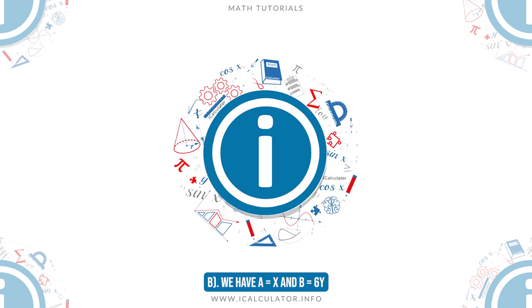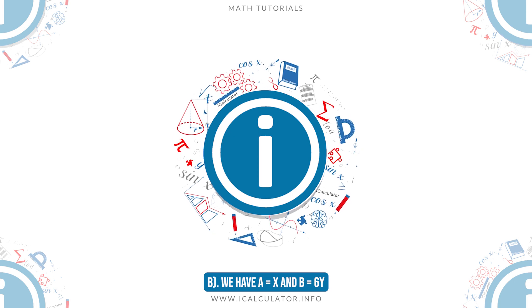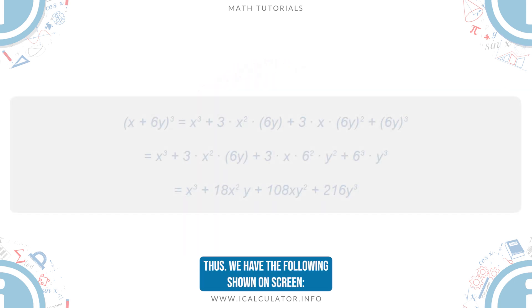B, we have a equals x and b equals 6y. Thus, we have the following shown on screen.